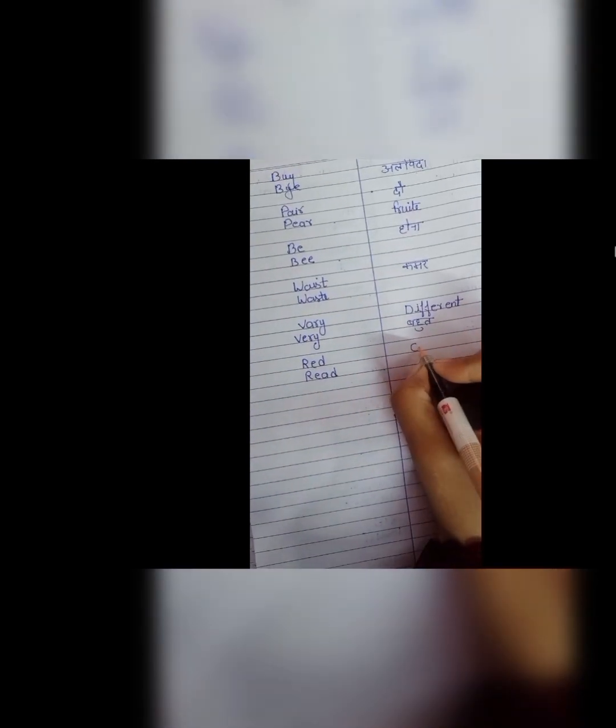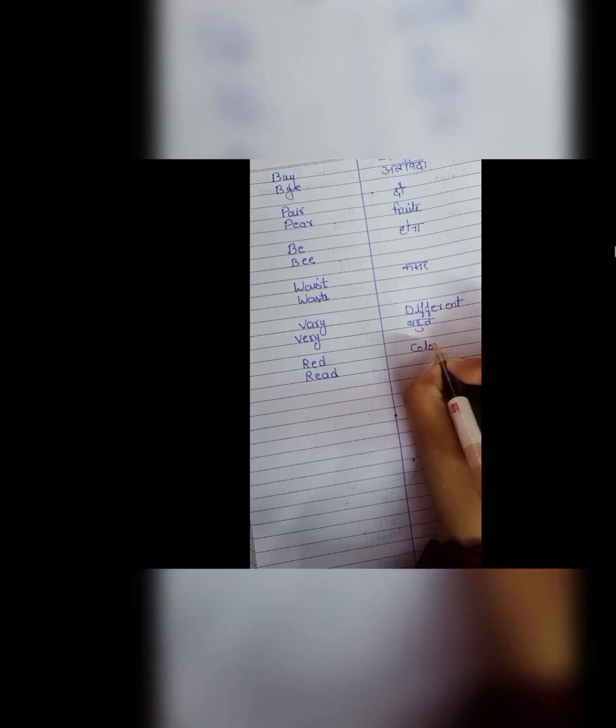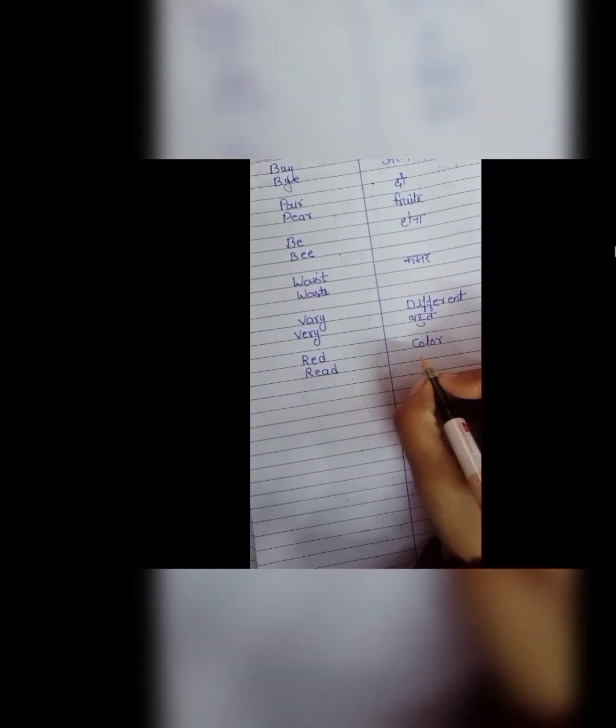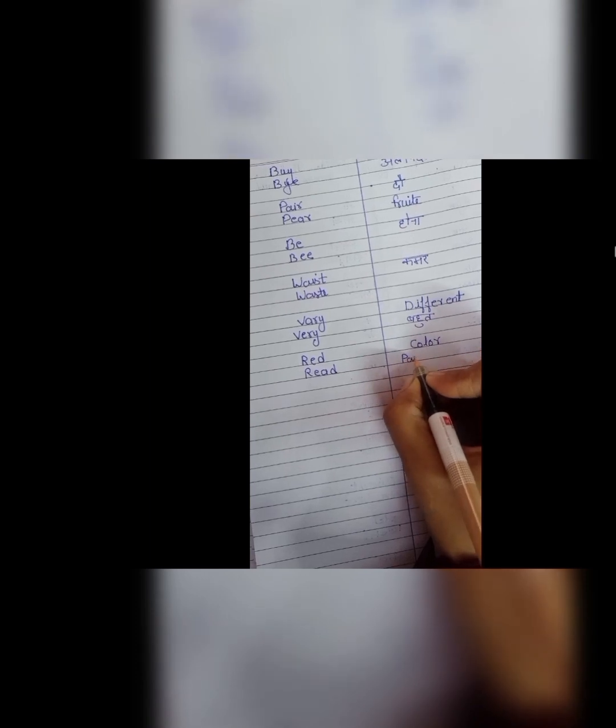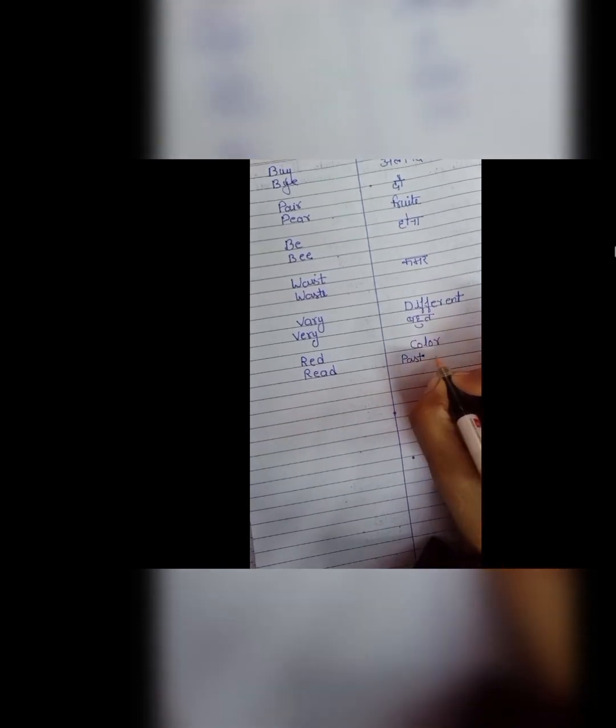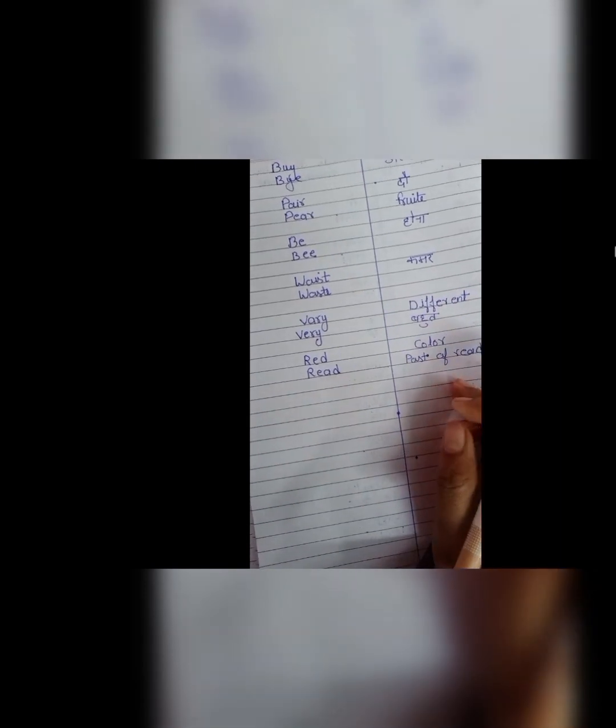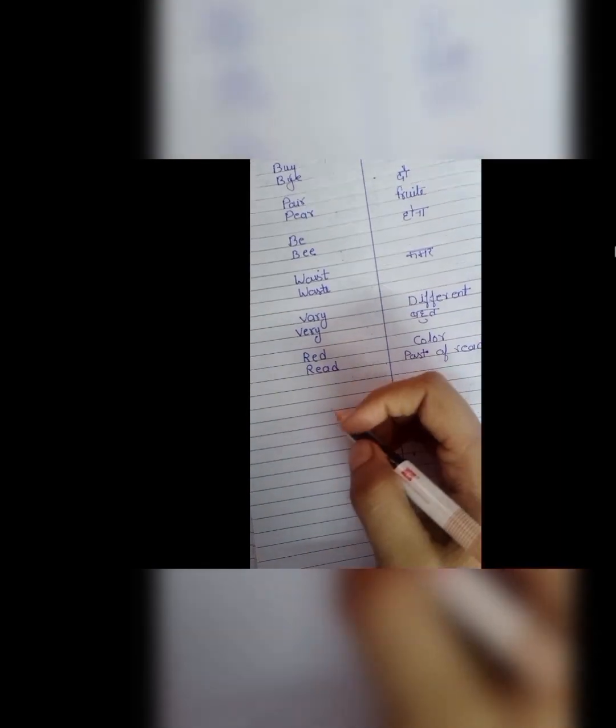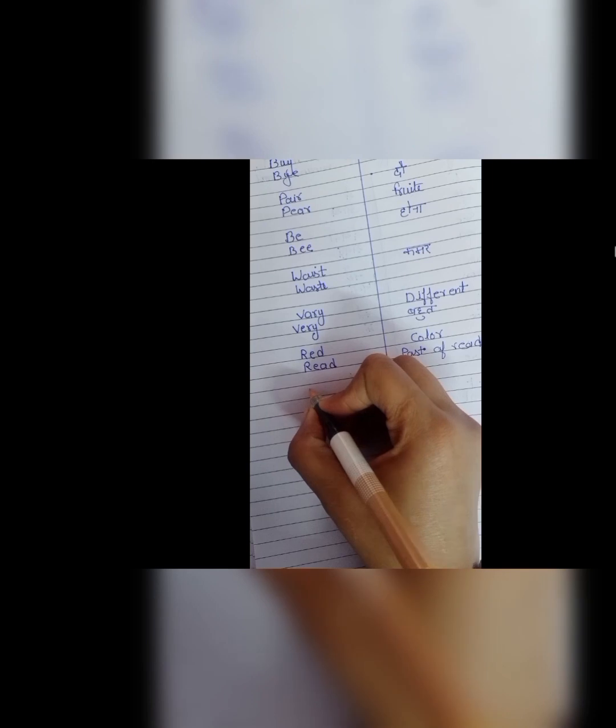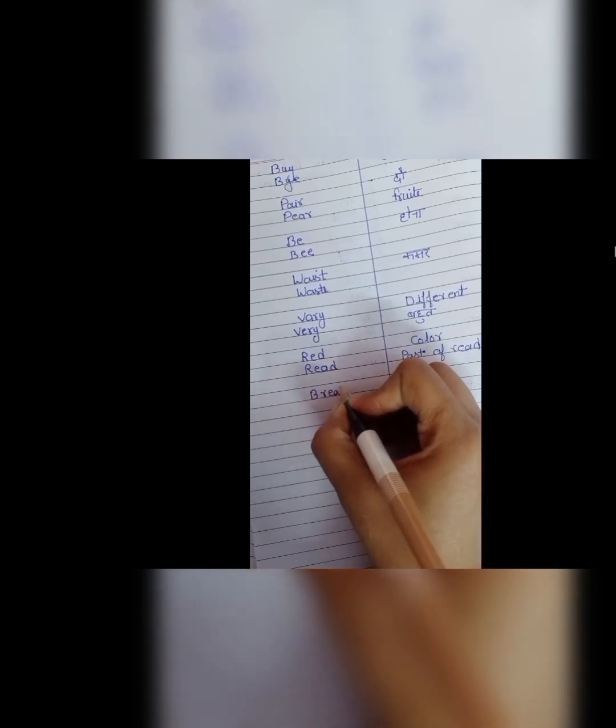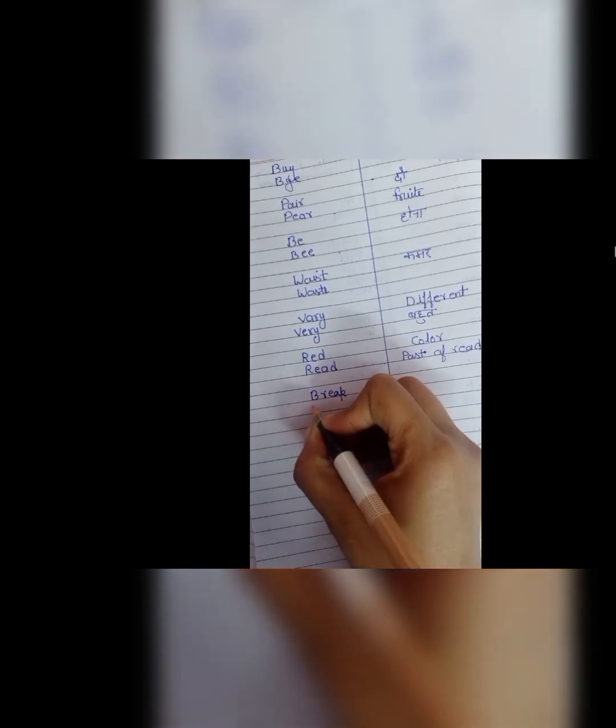Next is red and read. R, E, D, red is color red color lal color. And R, E, A, D is read. This is also pronounced as read but ye read ki past tense me hum isko as a red padhte hain. Jab ye depend karta hai hamare sentence ke hum past me agar sentence bana rahe hain toh hum is read ko pronounce karenge red.